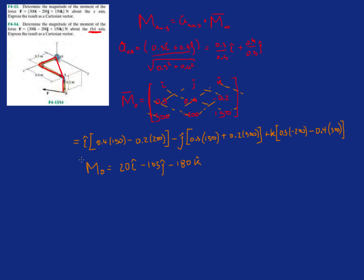So the total moment about O will be 20i minus 105j minus 180k newton meters. So the final thing we have to do is to find the amount of moment that is being shot up through OA.